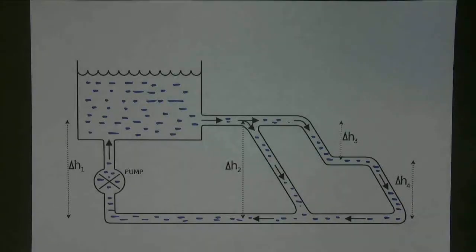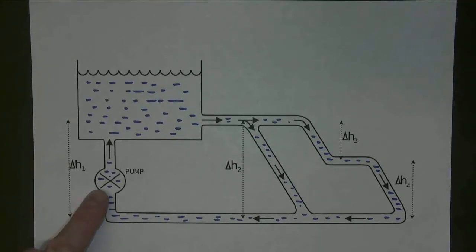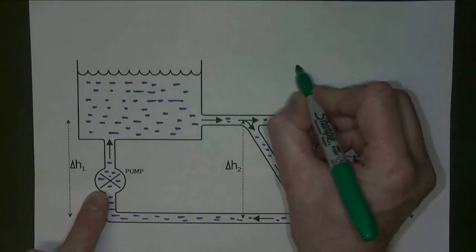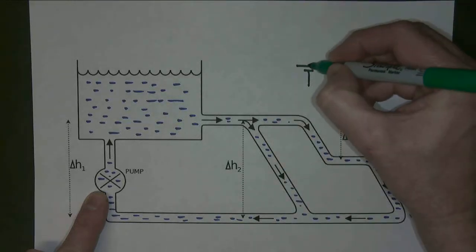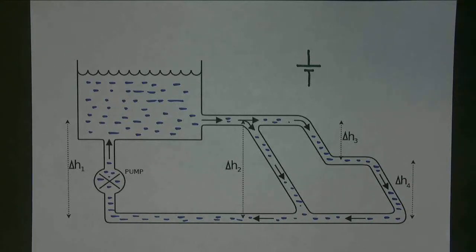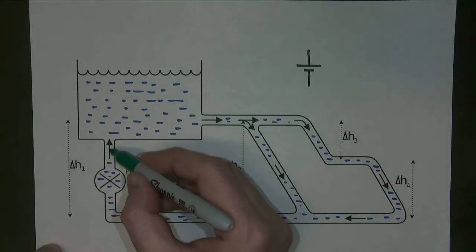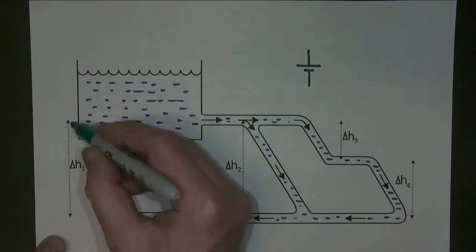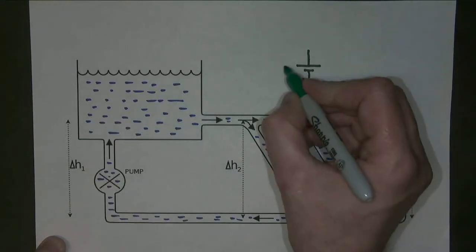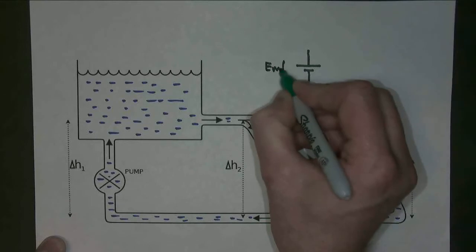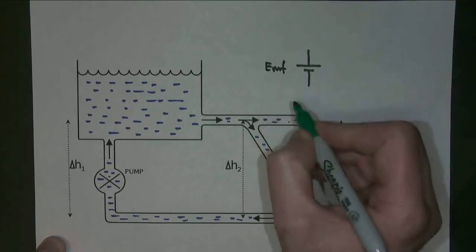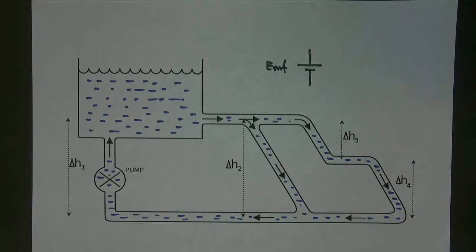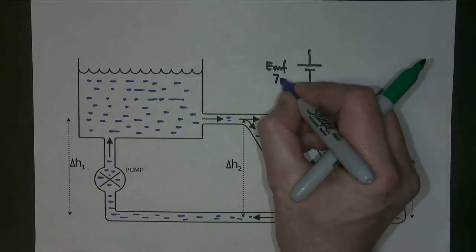This is a water analogy which is good for looking at voltage rather than current, and it can be slightly confusing so you have to think about it carefully. Here we have a pump, which represents an electrical cell. What a pump does in this case is it gives the water in the circuit — representing our charge carriers, our electrons, flowing through pipes which represent wires — it gives them height. Here they gain height H1, which is equivalent to our charge carriers gaining a voltage or an EMF — say, arbitrarily, seven volts.